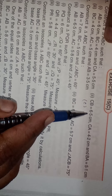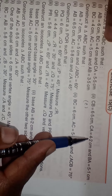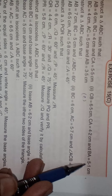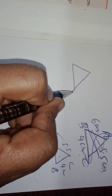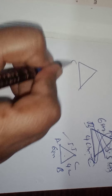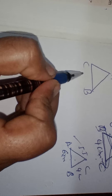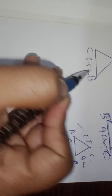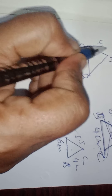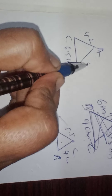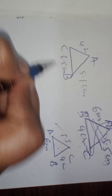Moving to the second question. I will do one more question; the third one you have to do yourself. The sides given are: CB equals 6.5, CA equals 4.2, and BA equals 5.1. This is the rough figure for the second question.